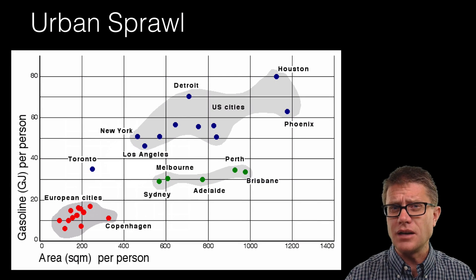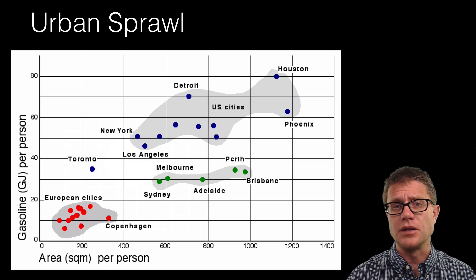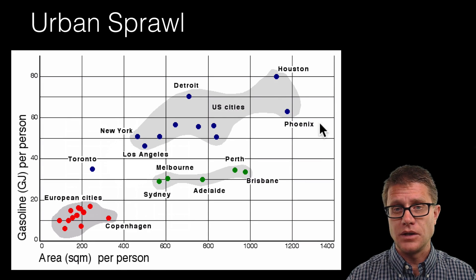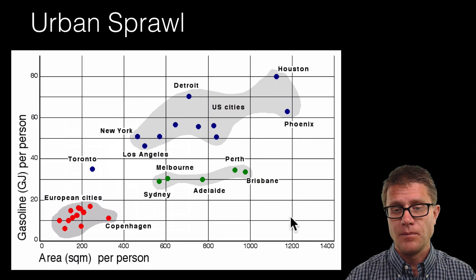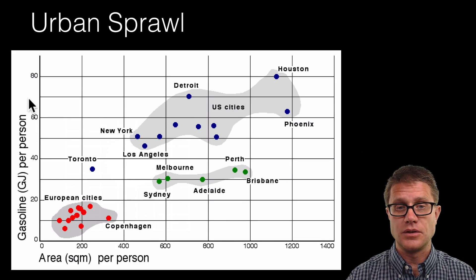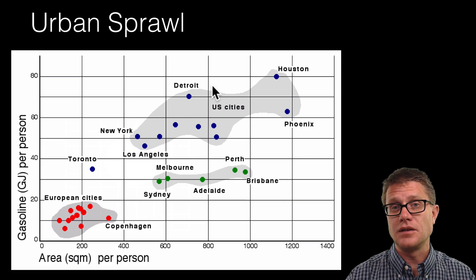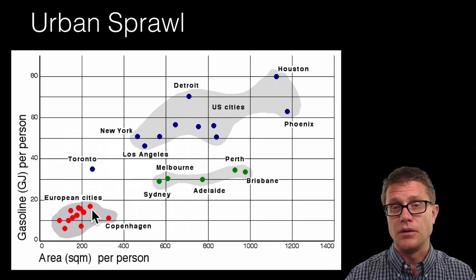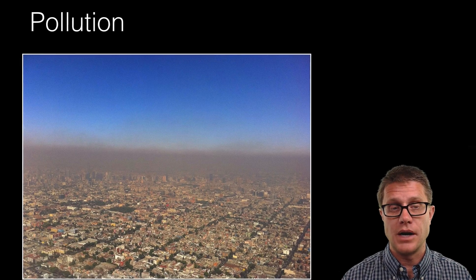This is more of a problem in the U.S. If we look at this graph — area per person for all U.S. cities — in cities like Houston and Phoenix we have low density housing. If we look at gasoline use in the U.S., we are going to be using more gasoline. Since cities in the U.S. formed later than those in Europe, and also since we were using the automobile and had an increase in highway structure, we have had this sprawl be a larger problem in the U.S.